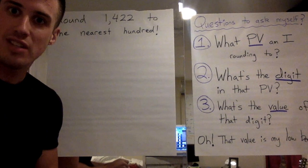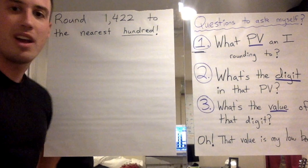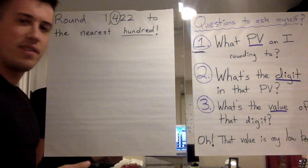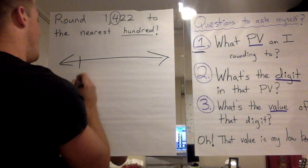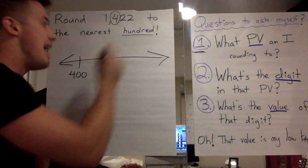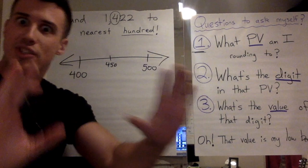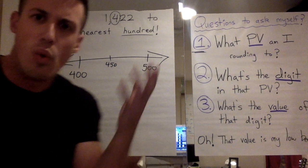I have $1,422 that I need to round to the nearest hundred. Step one: what place value am I rounding to? Hundreds — I'll underline that. Step two: what's the digit in that place value? It's a four. The value of that digit is 400, in the hundreds place. So I draw a number line: 400 is my lower benchmark, 500 is my next benchmark, and 450 is the midpoint. Wait — stop! Something's wrong. 1,422 is not between 400 and 500. That doesn't make sense.